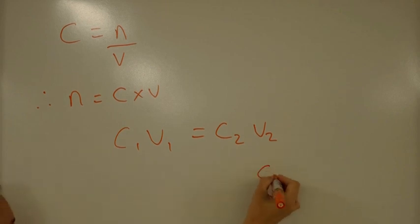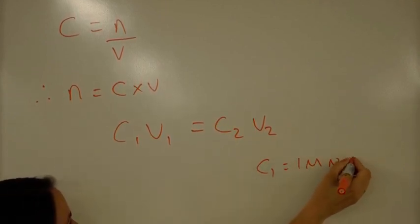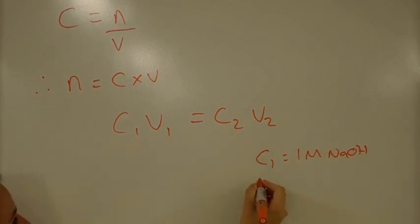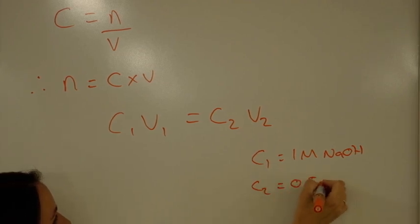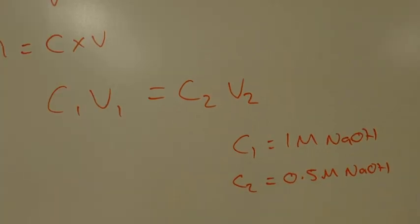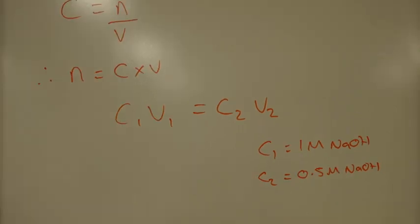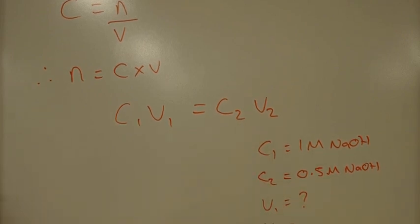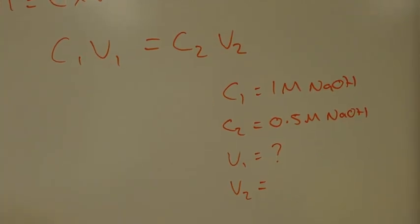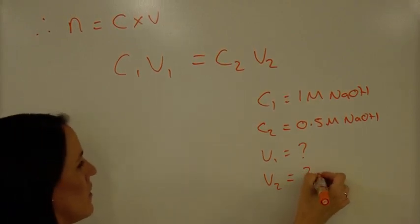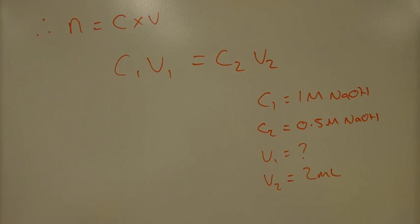Let's work through a calculation. Starting with the one molar sodium hydroxide stock: our initial concentration C1 is 1 molar. We want a final concentration C2 of 0.5 molar sodium hydroxide. V1 is how much of the initial stock we need to transfer — that's what we're finding — and V2 is the total final solution volume. We'll make 2 mils of final solution, which is a good amount for a test tube.